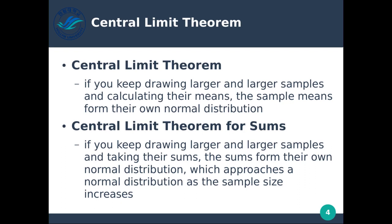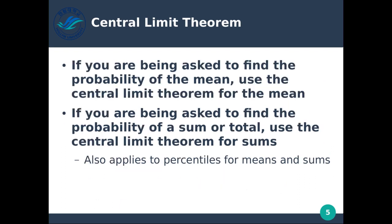The central limit theorem for sums says: if you keep drawing larger and larger samples and taking their sums — instead of their means as in the standard CLT — the sums form their own normal distribution, which approaches a normal distribution as the sample size increases. So we can apply this with both the means and the sums of our samples.